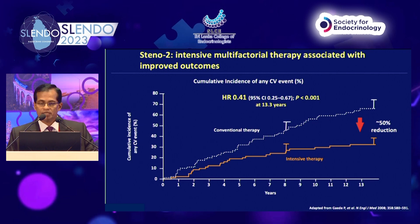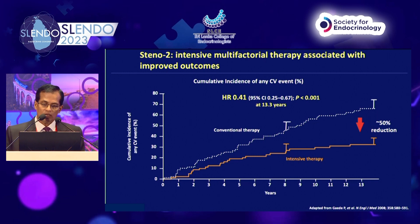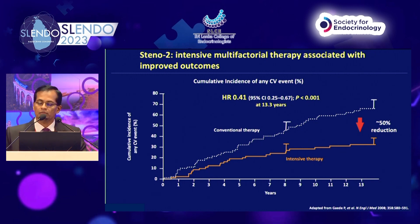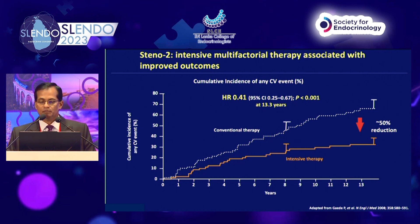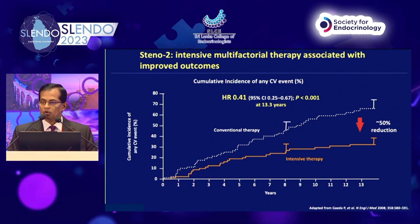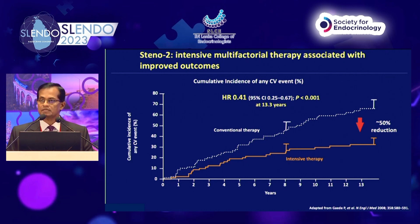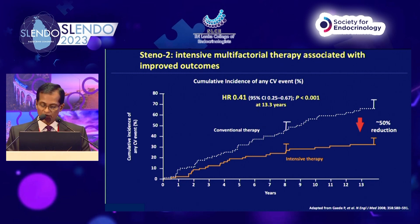Looking at older studies: over a study period of eight years comparing conventional versus intensive glycemic control, the intensive arm included multifactorial intervention with hypertension and dyslipidemia management, aspirin where needed, and lifestyle modification — resulting in a huge reduction of cardiovascular outcomes. After 13 years of follow-up there was about a 50% reduction in cardiovascular risk with the multiple risk factor approach in managing diabetes.